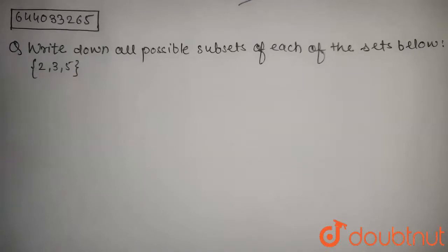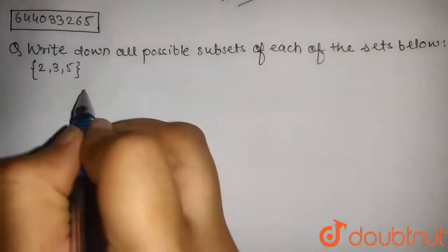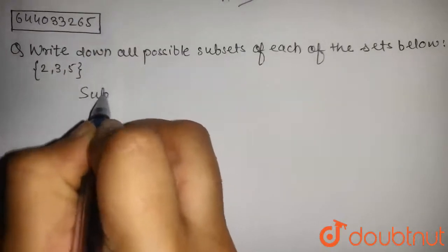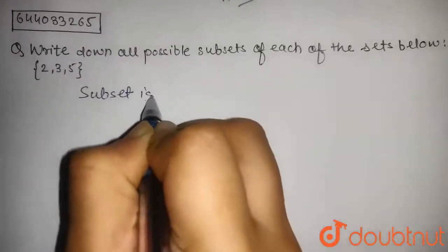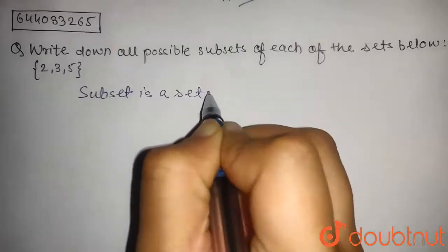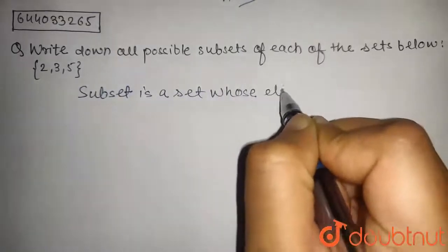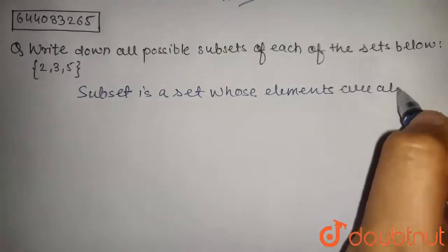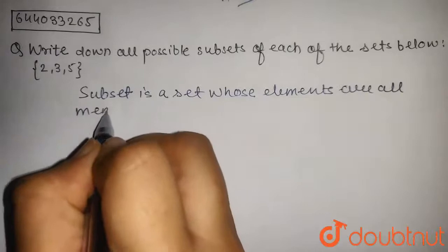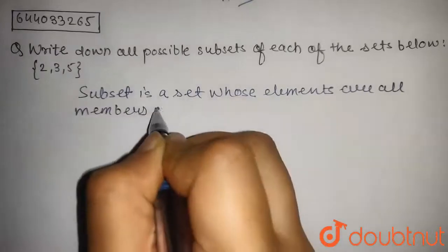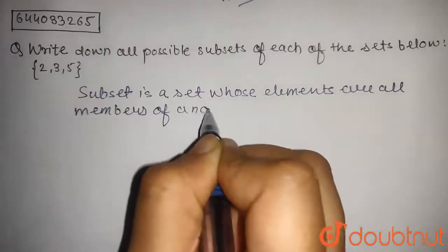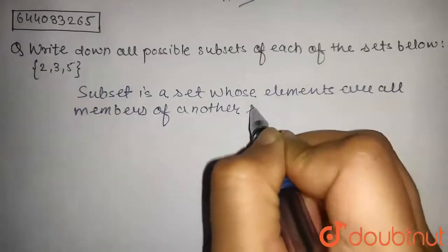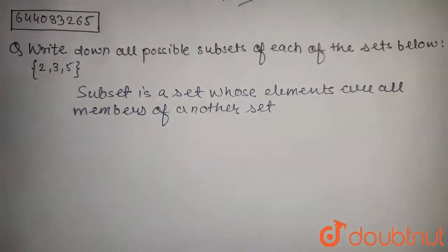First we will understand what is a subset. A subset is a set whose elements are all members of another set. So we have to find subsets of 2, 3, 5.